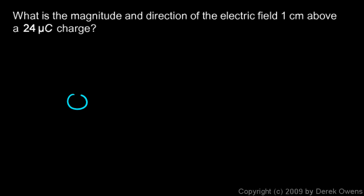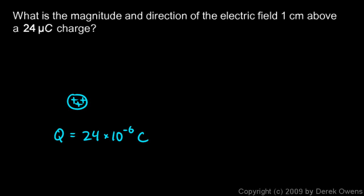I'll draw the charge — just a little picture. This is a positive charge; there's no negative sign. The amount of charge, q, is 24 microcoulombs — 24 times 10 to the negative 6 coulombs — because micro means millionth, or 10 to the negative 6. Around a positive charge, the field is outward. Field lines always point outward around the charge, so above the charge — at a point up here — the field is up.